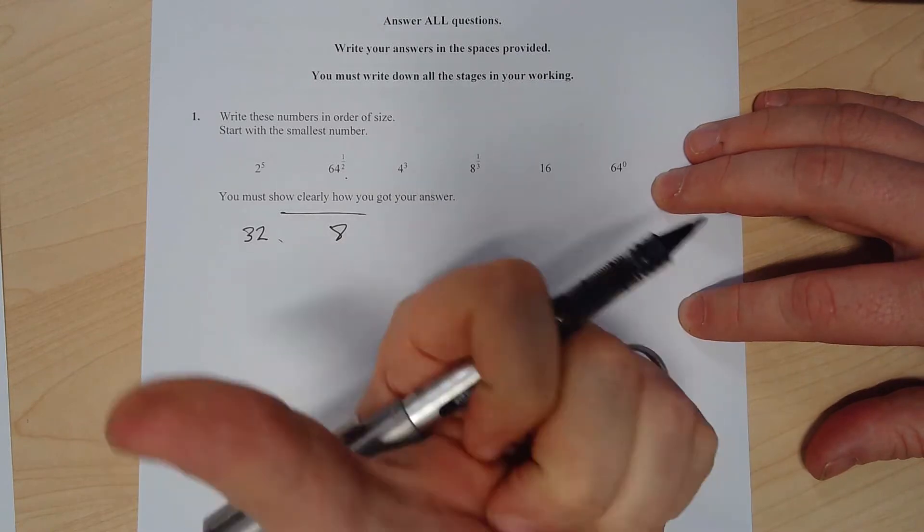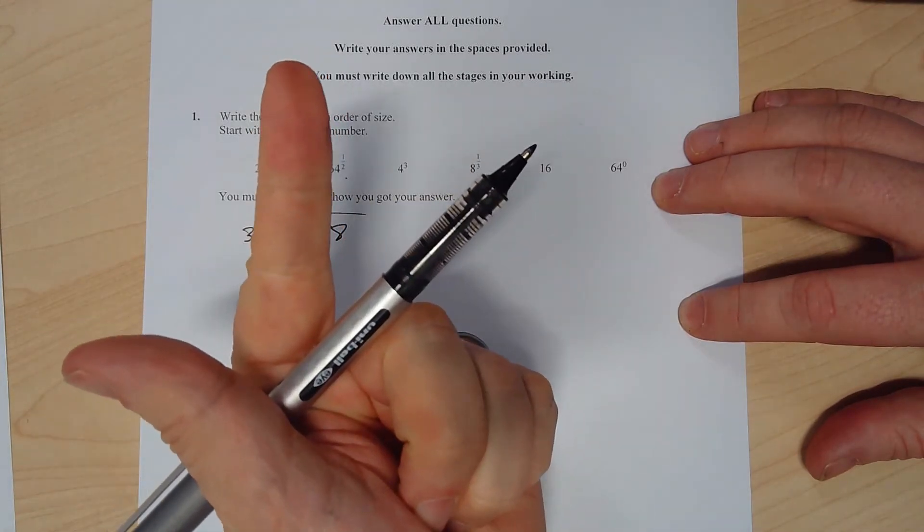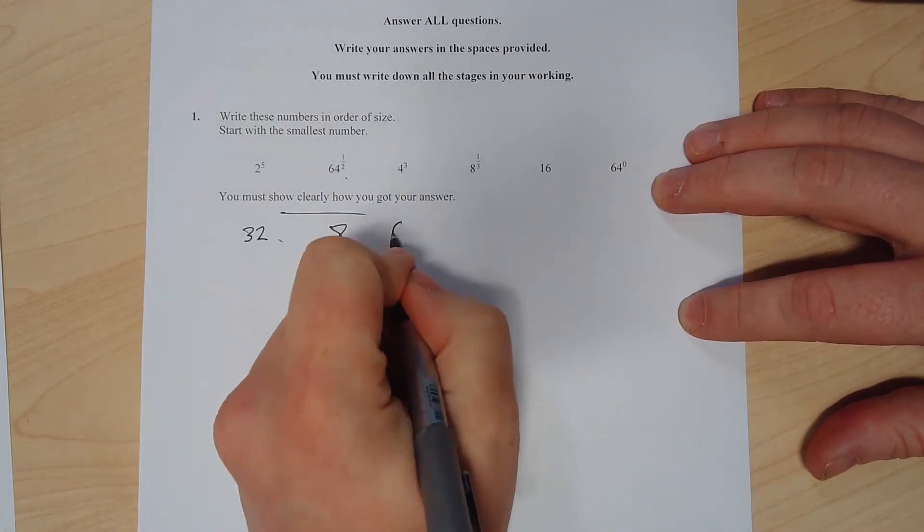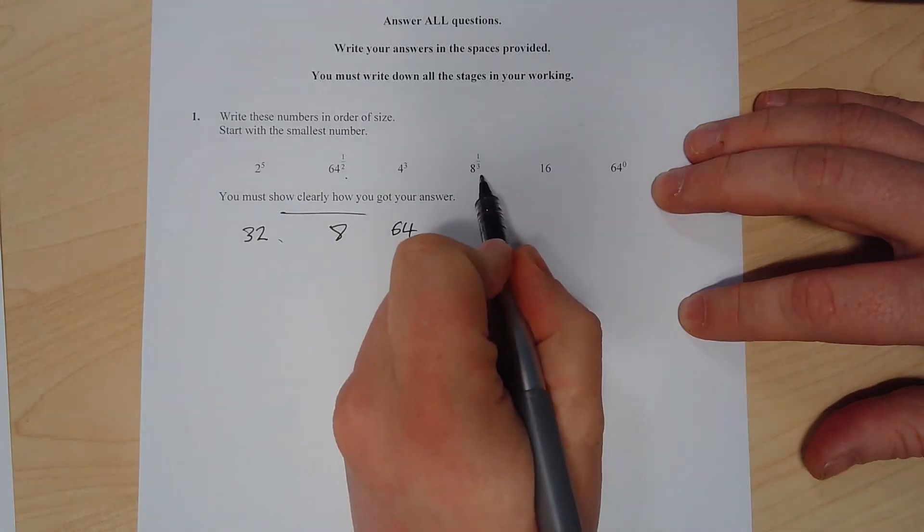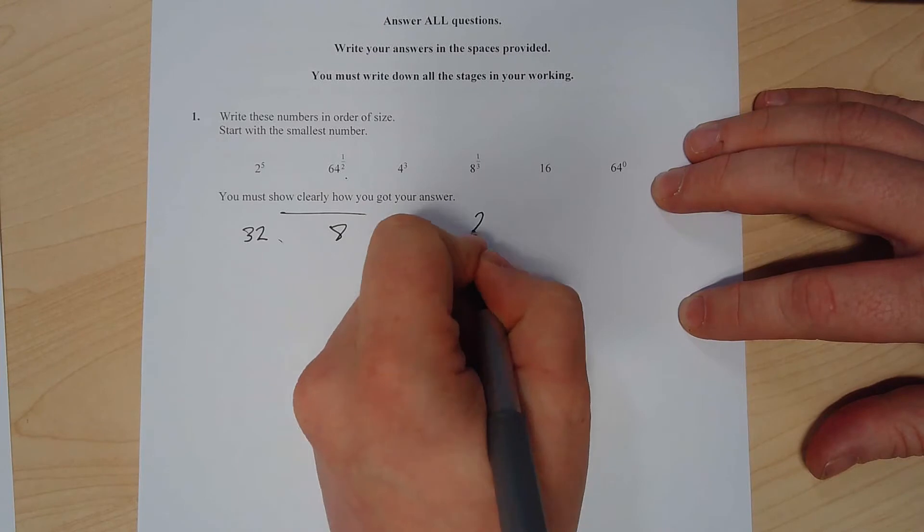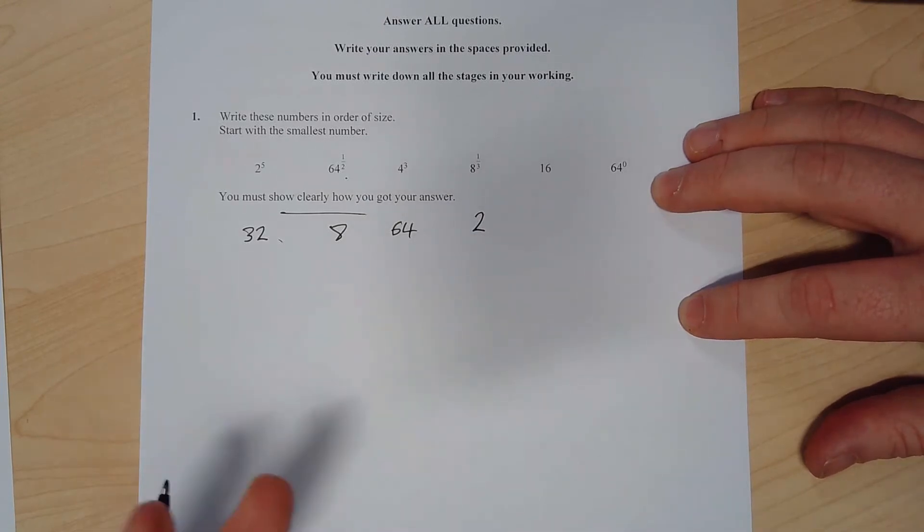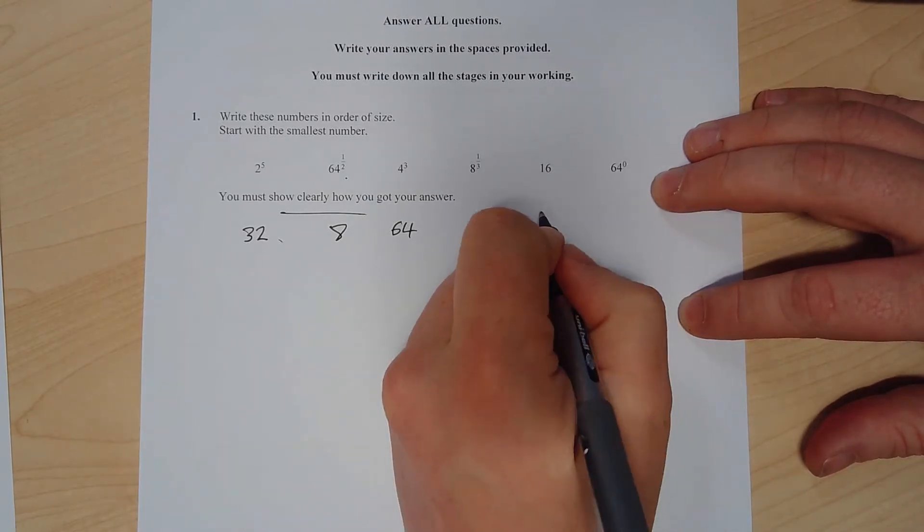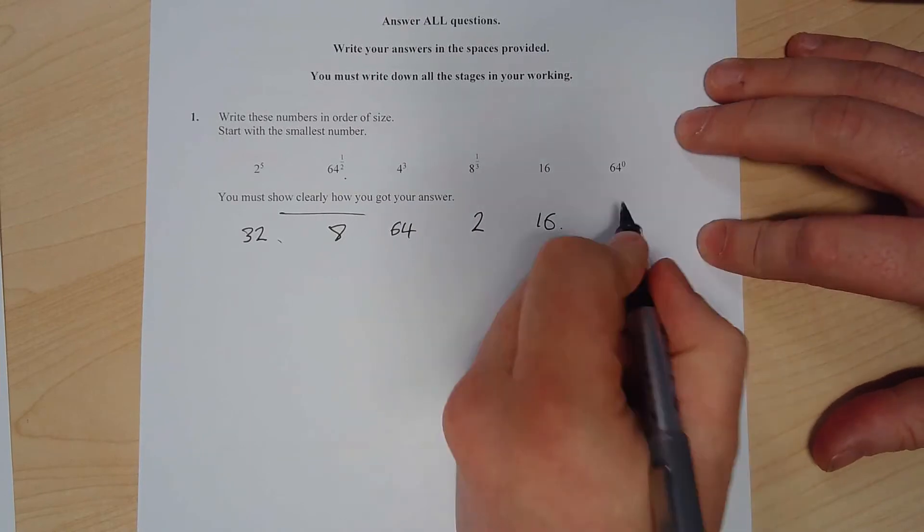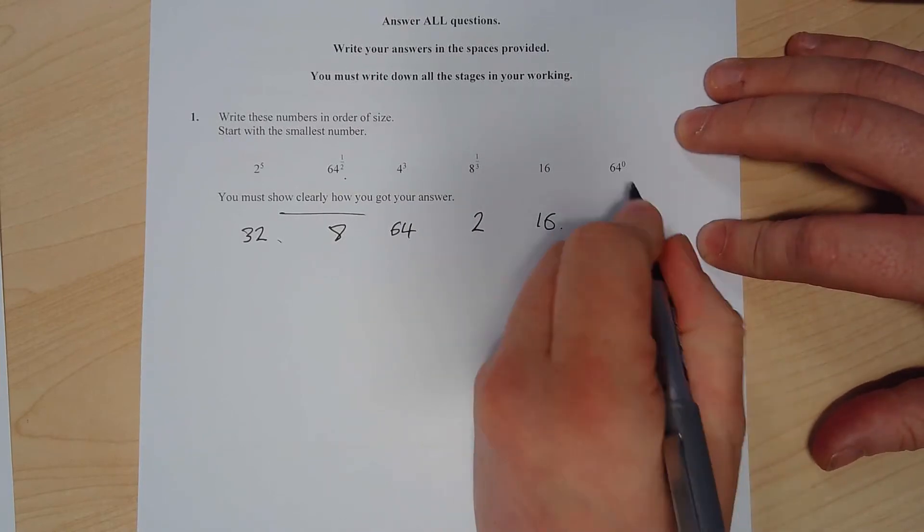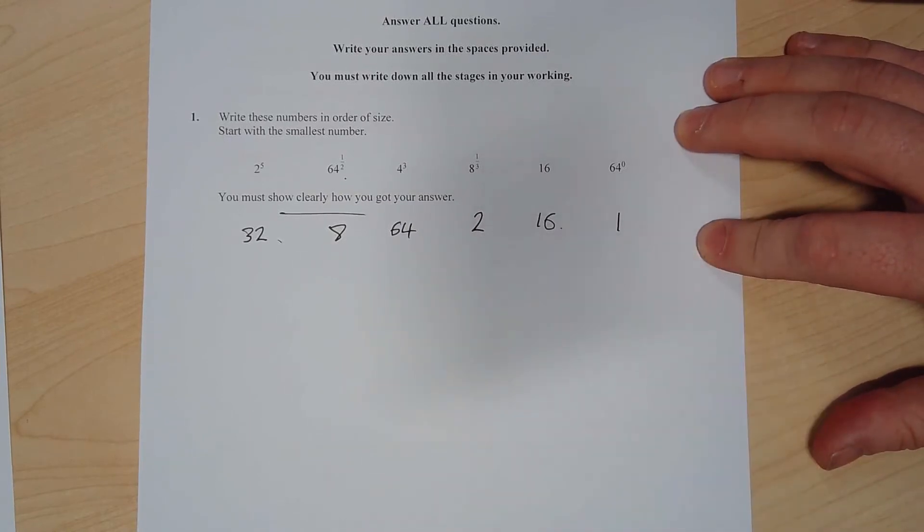8 to the power of a third - power of a third is the cube root, so the cube root of 8 is 2, because 2 times 2 times 2 makes 8. 16 is just 16. And 64 to the power 0 - you should know that anything to the power 0 is always just 1. Once you've got all those numbers, it's easy to write down in order of size from the smallest number.